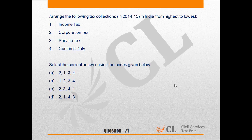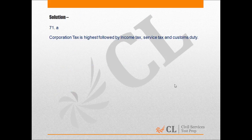Select the correct answer using the codes given below: A) 2 1 3 4, B) 1 2 3 4, C) 2 3 4 1, or D) 2 1 3 4. The correct answer is A. Corporation tax is highest, followed by Income tax, Service tax, and Customs duty.